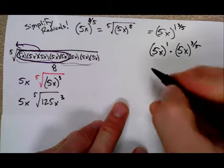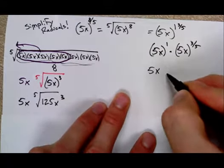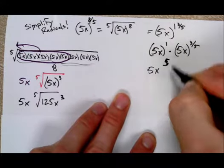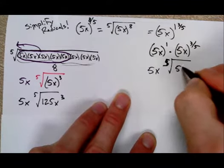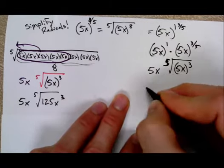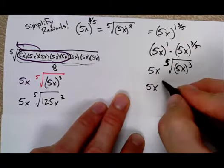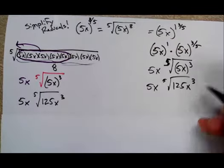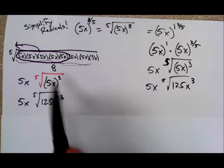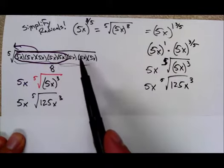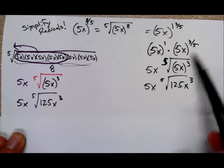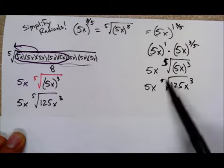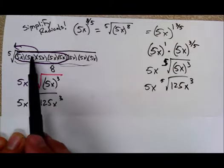And so this 5x is sitting out front. You have to do the 5th root of 5x to the 3rd, and so you have 5x 5th root of 125x cubed. So you get to the same place again, but nobody wants to write out all 8 of these 5x's, which is why this is the thought process here, and so the mixed number is a much faster way to do it. Why does the mixed number work? Because this is what we're looking for. We're looking for the whole 5 out of 5 as a fraction.